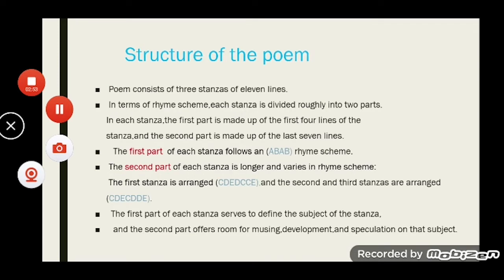Each stanza consists of 11 lines, so there are 33 lines total in this poem. In terms of rhyme scheme, each stanza is divided roughly into two parts. The first part is made up of the first four lines and follows an ABAB rhyme scheme. The second part, made up of the last seven lines, varies: the first stanza is arranged CDEDCCE, and the second and third stanzas are arranged CDECDDE. The first part of each stanza defines its subject, while the second part offers room for development and speculation.